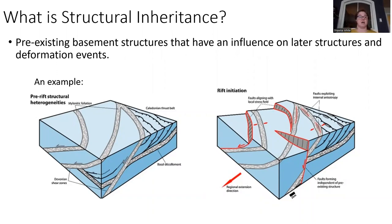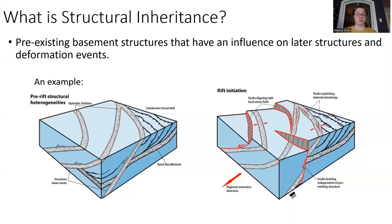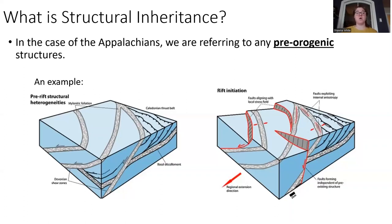Structural inheritance — what I'm basically referring to is pre-existing basement structures that have an influence on later structures or later deformation events. As you can see here, these would be pre-existing faults or shear zones or heterogeneities in the Earth's crust. They become zones of weakness that are prone to reactivation under certain stress regimes. When I'm referring to structural inheritance in the Appalachians, I'm referring to any pre-orogenic structures — structures that existed pre-building of the Appalachians.